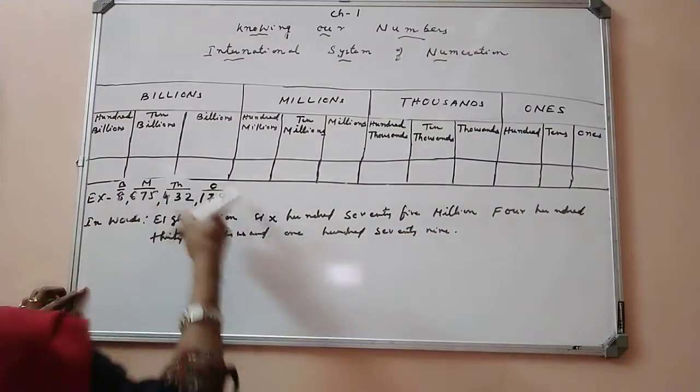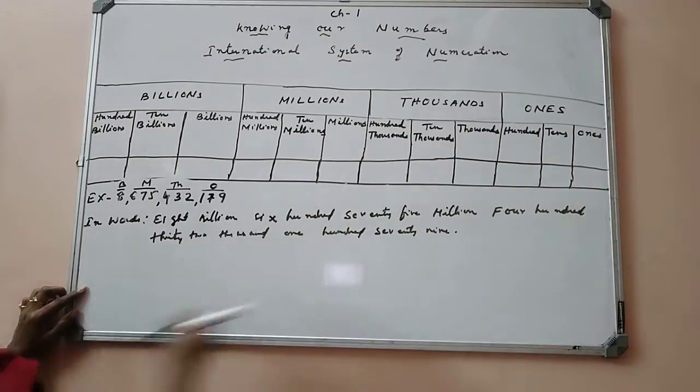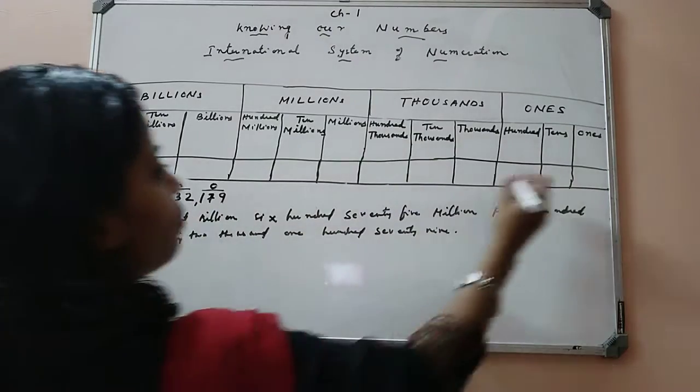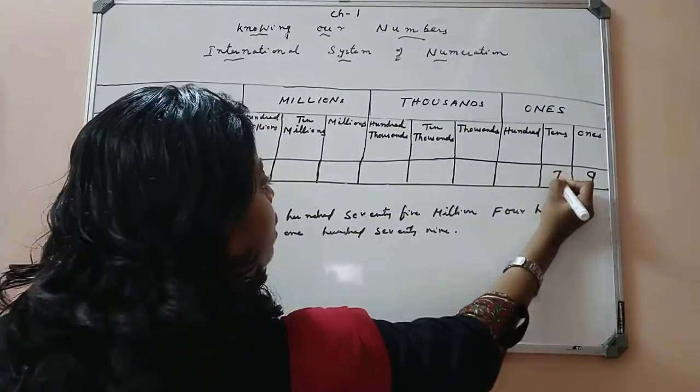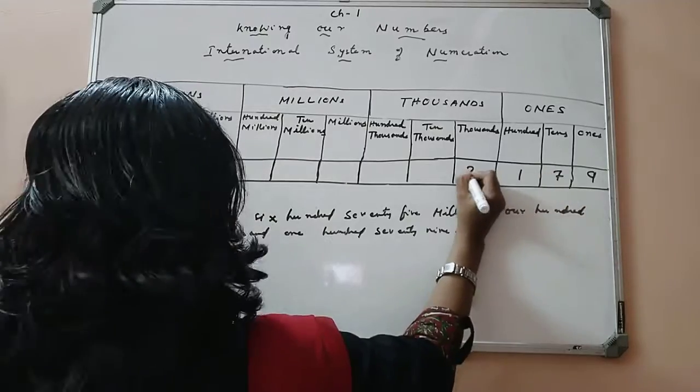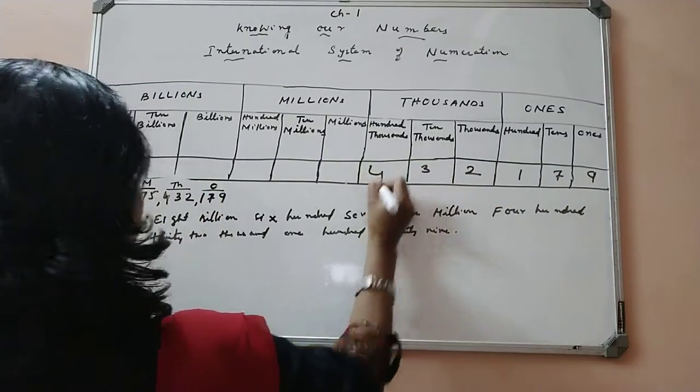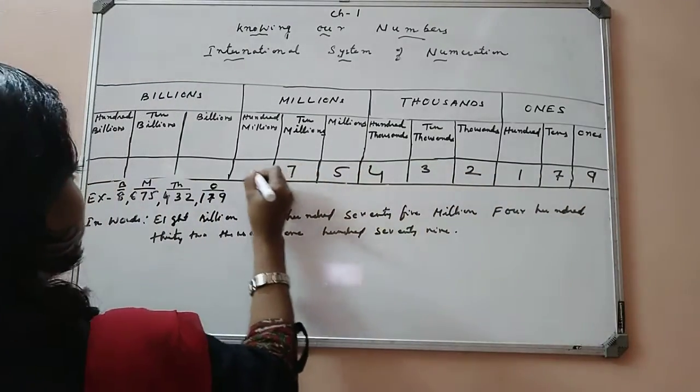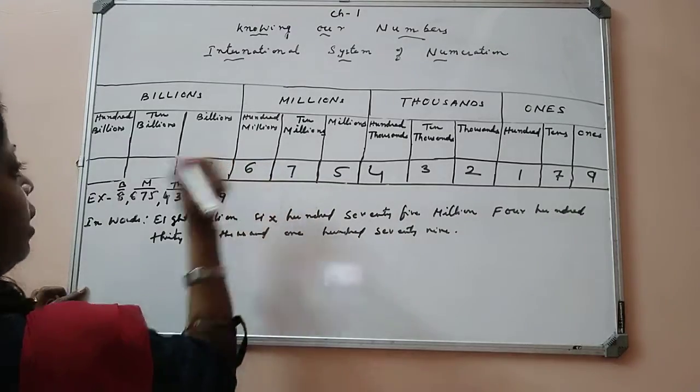Now let us fill these numbers in this place value chart. Like we have 9 here, 7, then 1, 2, 3, 4, 5, 7, 6 and then 8.